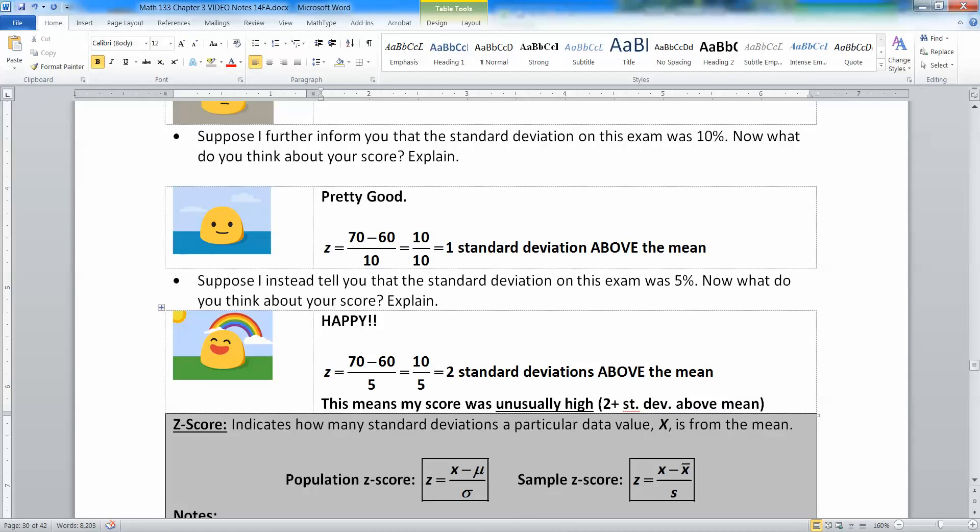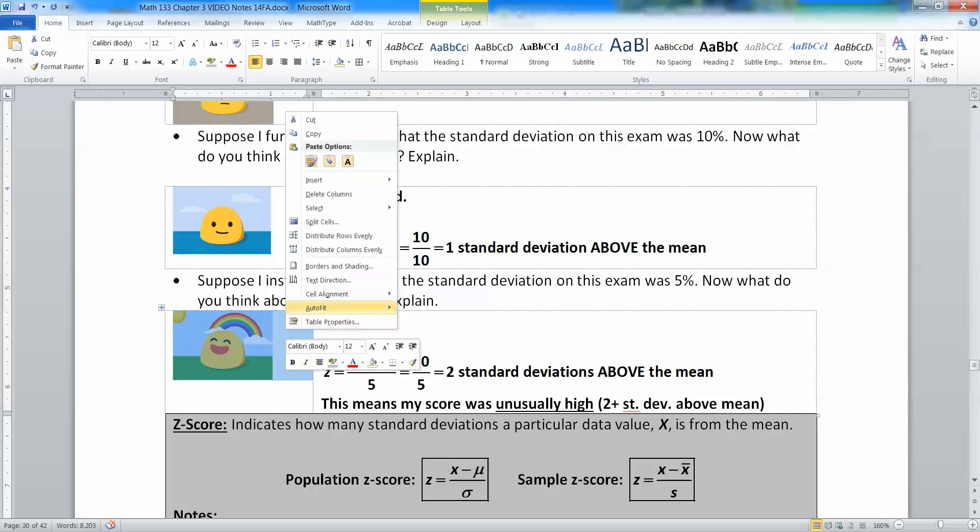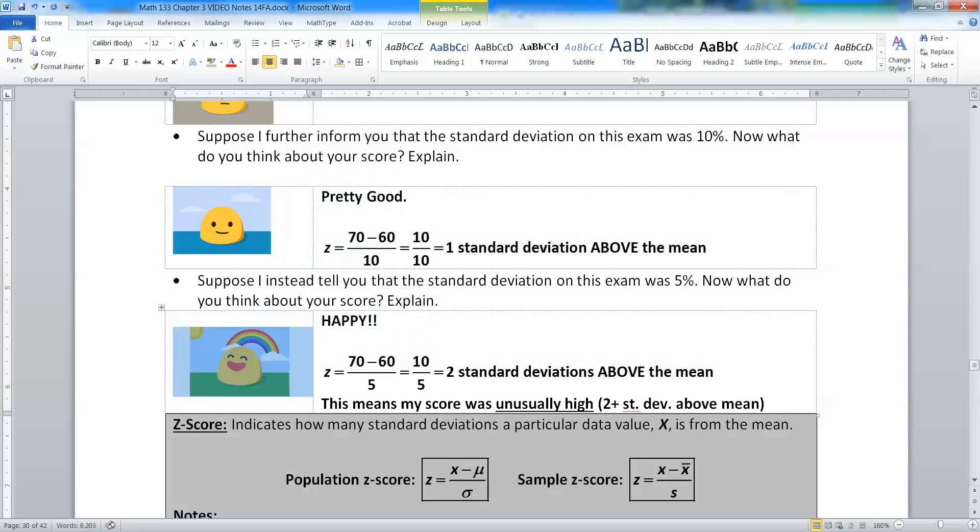So that's basically right on the verge of unusually high, because we said being more than two standard deviations was unusually high. So you're unusual. Two or more is unusual, and that's really good. That shows that not only did you do better than most of the class, but you did quite a bit better than most of the class, even though your score was only a 70.